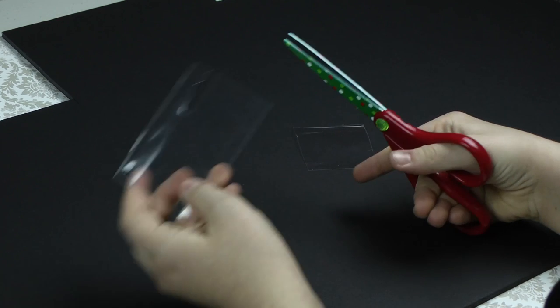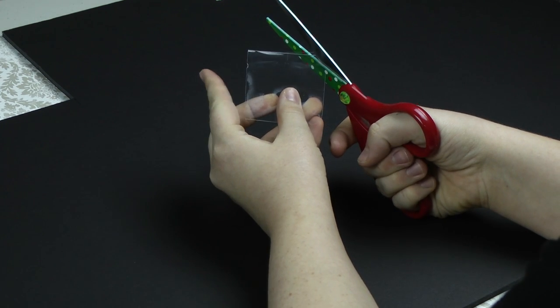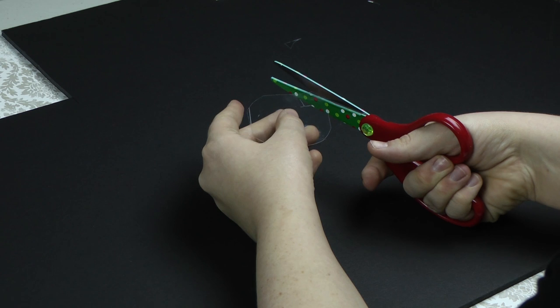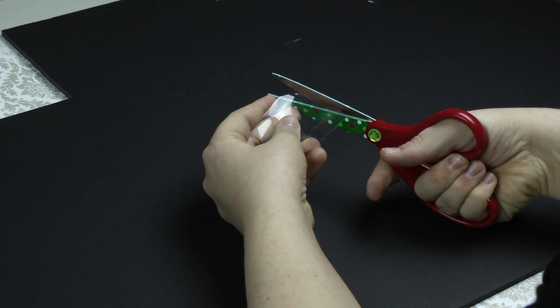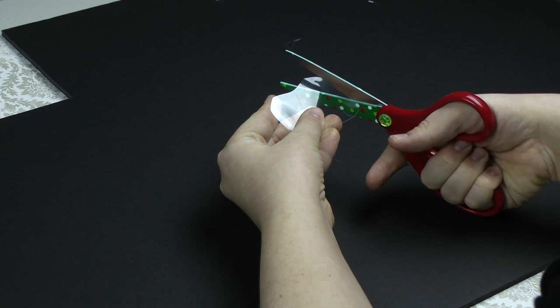First, you're going to cut the plastic into a square with rounded corners. Then cut a curve out of each side. You want it to be roughly 2 by 2 inches.